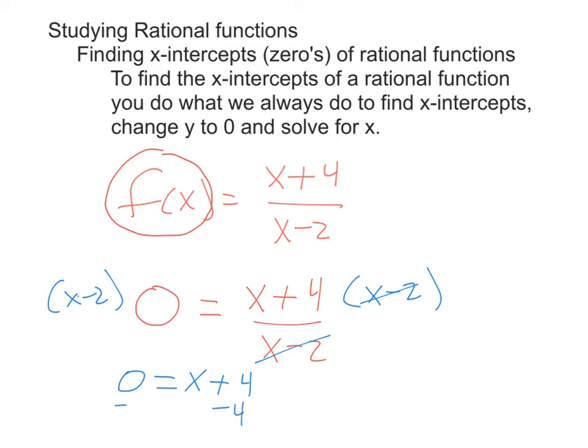And just finishing this out, we will subtract four. So x equaling negative four. We have to think of zeros as a point, though. It's an x-intercept. It's a point. So negative four is the x, and we let zero be the y. So the point negative four comma zero is the zero of this rational function. We don't want to technically leave it as this, because that's a line, and zeros are points.